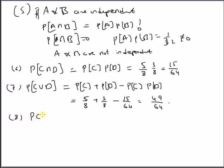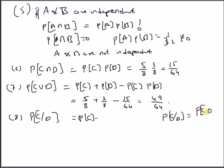Next is probability of C given D. Since C and D are independent, this equals probability of C. This can be verified using the conditional probability expression: probability of C|D equals probability of C∩D divided by probability of D. Since probability of C∩D equals probability of C times probability of D, this simplifies to probability of C, which is 5/8.